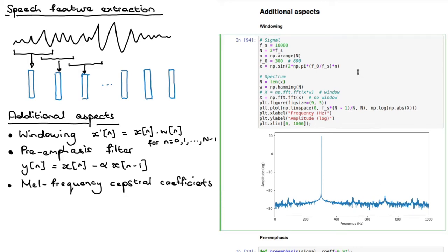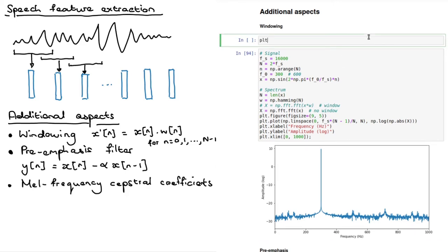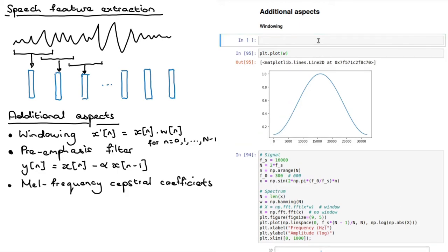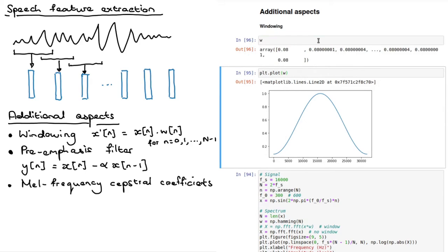I can show you quickly what the window actually looks like. Let's just plot it without doing fancy stuff. Remember this is discrete values, it's just a sequence of numbers that I'm weighing my input with. So you start at 0.08, then you go up to one and go down again. By weighing the input like this before you calculate the FFT, you're getting a much better behaved FFT.